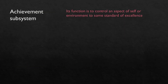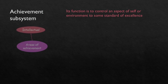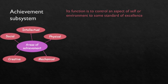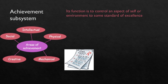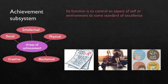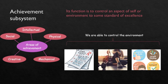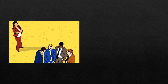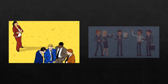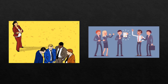The achievement subsystem's function is to control an aspect of self or environment to some standard of excellence. Areas of achievement include intellectual, physical, creative, mechanical, and social skills. When we master these, we feel a sense of achievement. For example, studying harder and achieving good results, exercising to develop physical health, or using creative thinking to gain recognition — when we master these skills we are able to control our environment, turning it in our favor, and that gives us a sense of achievement.